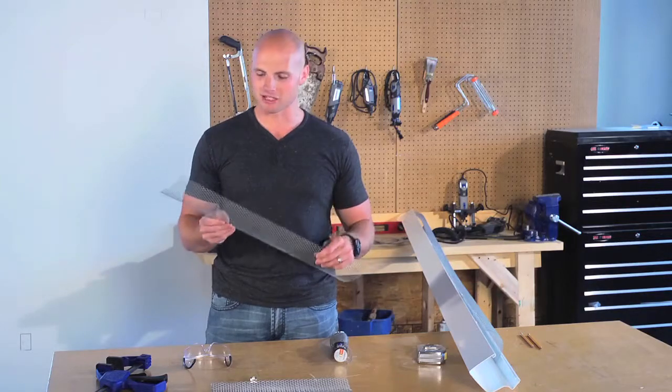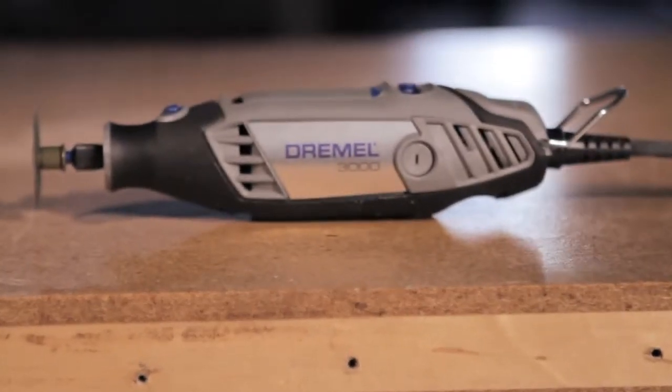This is metal expanded sheeting that I'm going to cut with a Dremel 3000 with an abrasive wheel.